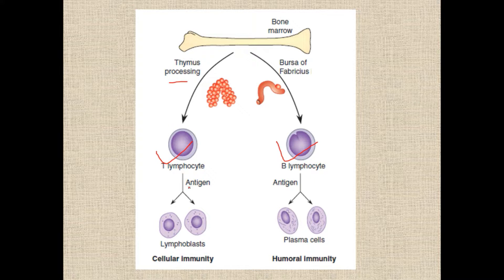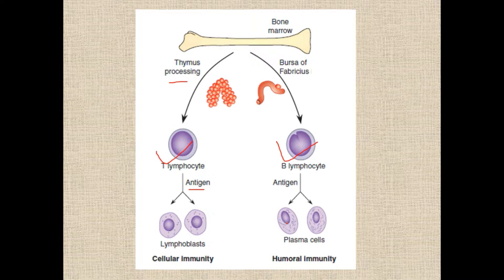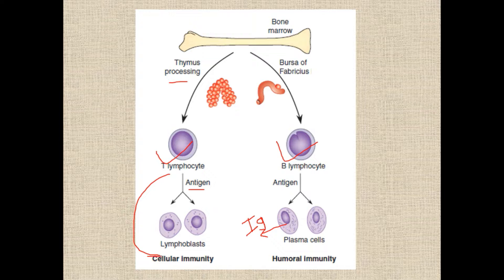T lymphocytes, when converted to lymphoblasts, divide to produce more T lymphocytes. Similarly, B lymphocytes, whenever they come into contact with an antigen, give rise to plasma cells that release immunoglobulins — different types of immunoglobulins. So T lymphocytes maintain cellular immunity, while B lymphocytes help maintain humoral immunity.